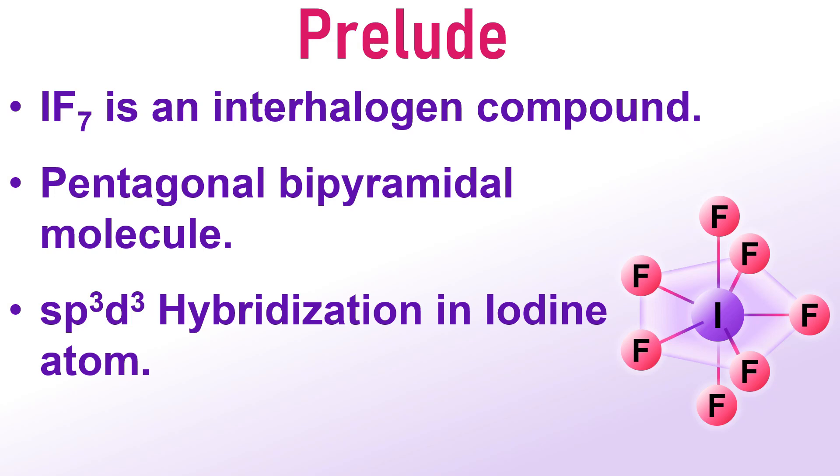Okay, let us begin with some key points about IF7 molecule. It is an interhalogen compound. It has a pentagonal bipyramidal shape. And the central Iodine atom undergoes sp3d3 hybridization.